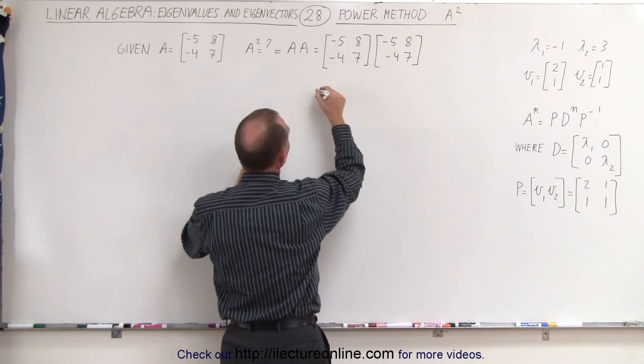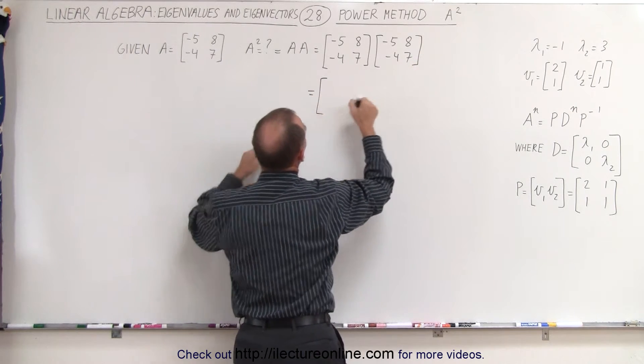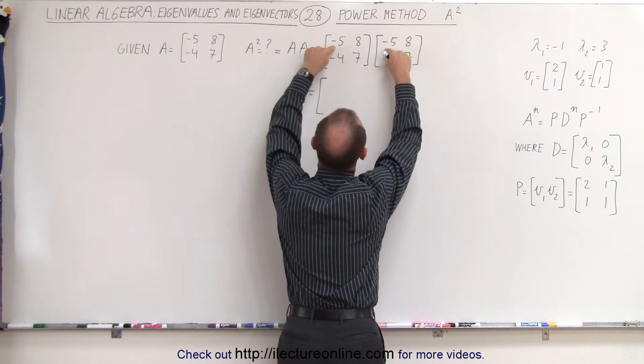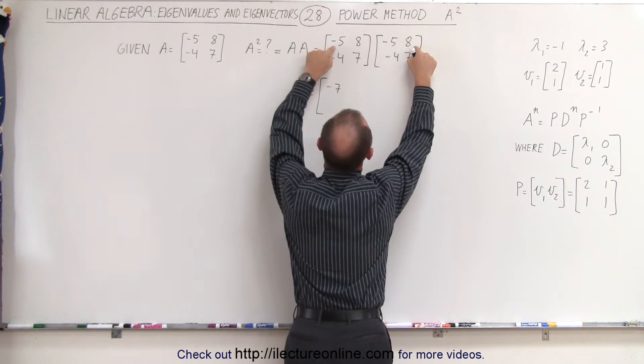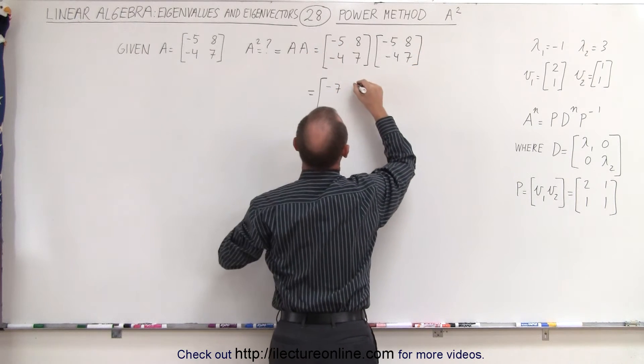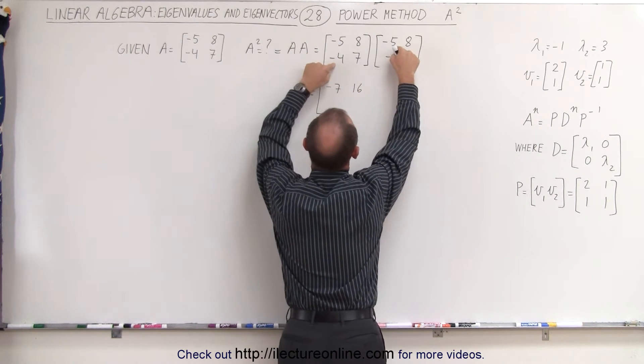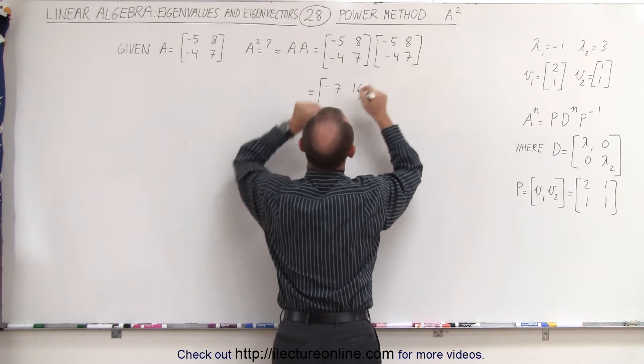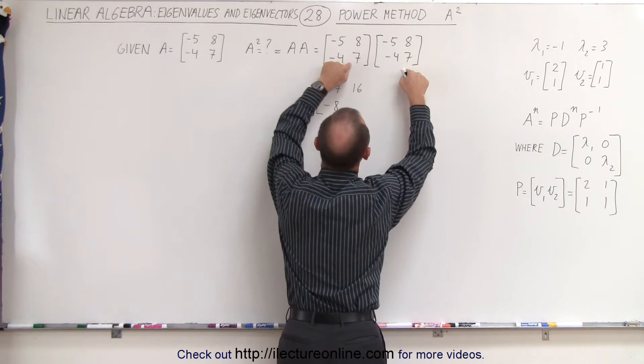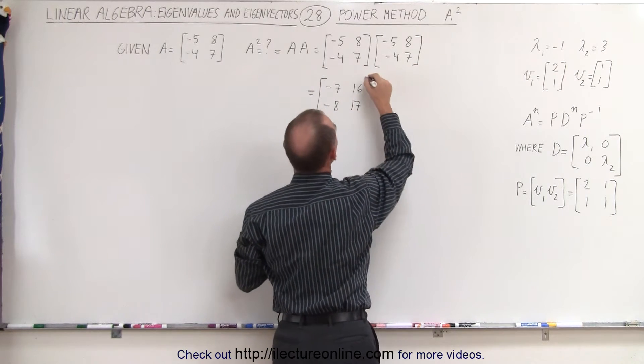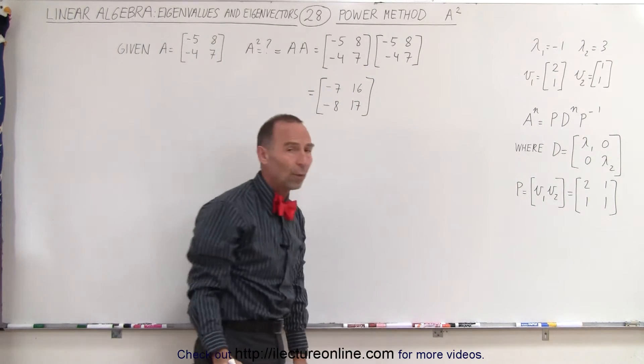Now let's multiply this out and see what we get. So for the first element, we get positive 25 minus 32, which is minus 7. Minus 40 plus 56, that's a positive 16. Positive 20 minus 28, that's a minus 8. And minus 32 plus 49, that's a positive 17. Yes, that is. All right, so here is A squared.